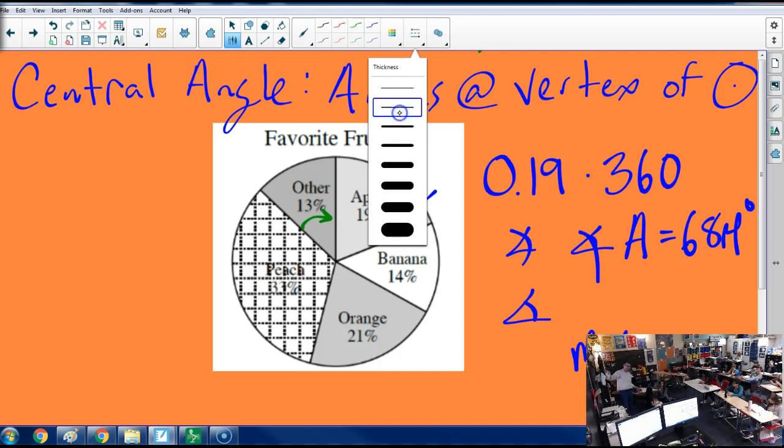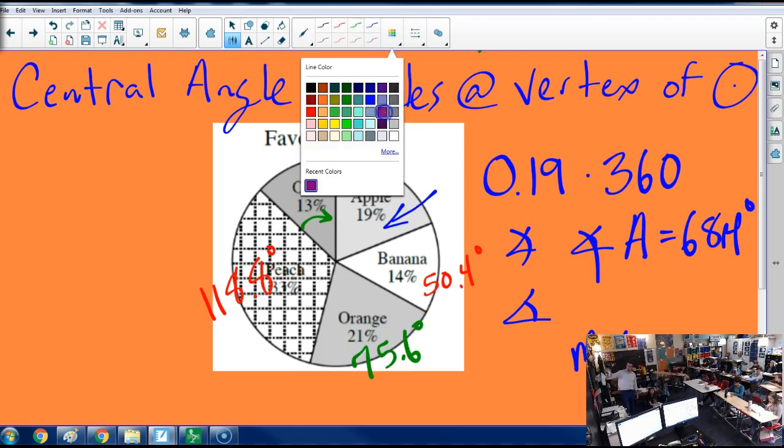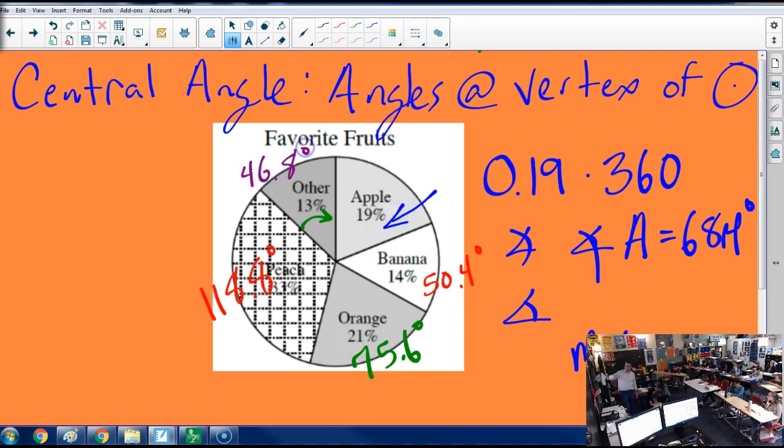What about bananas? 50.4. Make sure you're labeling degrees on these. Is peach 83 or is it 33? What does it look like? Do you compare it to how much of a pie it is? It's 33, right? It's a third of the pie. Orange 75.6. Other 46.8. How can we check if we're not quite sure? You add them all together and you see the parent system. We add them up. Check. Does it make 360?